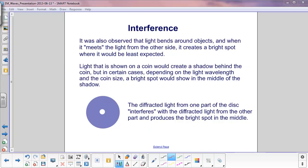It was also observed that light bends around certain objects, and when it meets the light from the other side, it would create a bright spot where it would be least expected. For example, light that is shown on a coin would create a shadow behind the coin. Of course that's what we would expect.